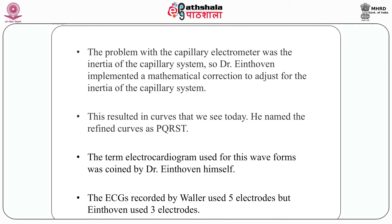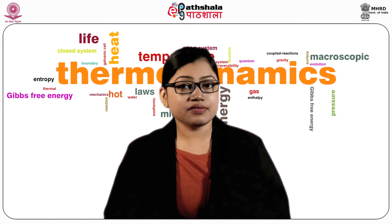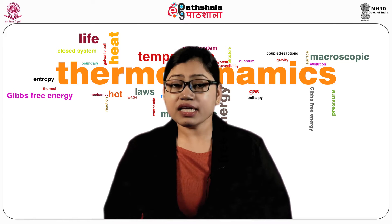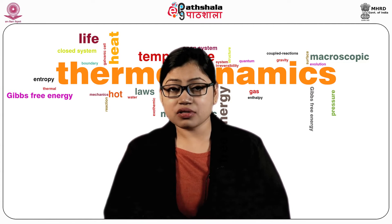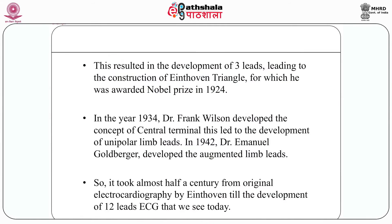The problem with the capillary electrometer was the inertia of the capillary system. So Dr. Einthoven implemented a mathematical correction to adjust for this inertia, resulting in curves that we see today. He named the refined curves as PQRST, following the mathematical tradition established by Descartes. The term electrocardiogram used for these waveforms was coined by Dr. Einthoven himself. In 1901, he successfully developed a new string galvanometer with very high sensitivity, which weighed 600 pounds. The ECG recorded by Waller used five electrodes, but Einthoven used three electrodes, resulting in the development of three leads and the construction of the Einthoven Triangle, for which he was awarded the Nobel Prize in 1924.